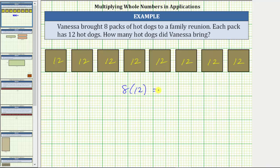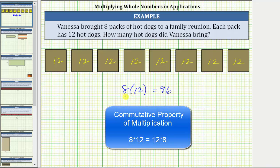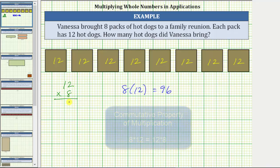Eight times 12 is equal to 96. If we need to, we can determine this product by hand. By doing it by hand, we would probably use the commutative property of multiplication and write eight times 12 as 12 times eight. Two times eight is equal to 16. Record the six. Perform an exchange with the one. Eight times one is eight, plus one is nine, giving us a product of 96. Vanessa brought 96 hot dogs.